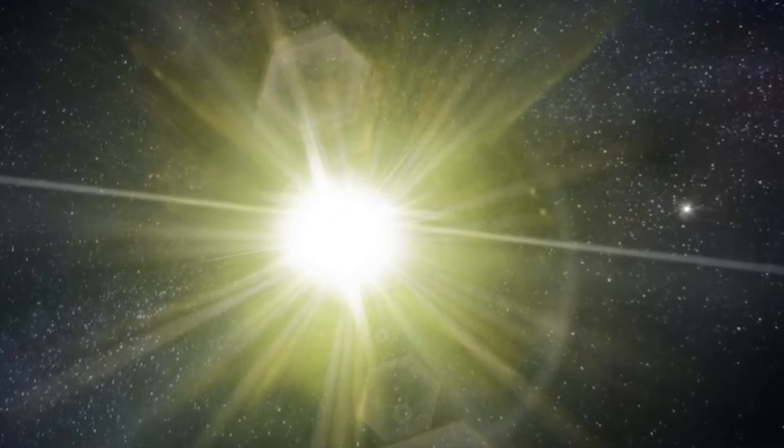Procyon is a binary star system located approximately 11.4 light-years from Earth, consisting of a main sequence F-type star, Procyon A, and a white dwarf companion, Procyon B.